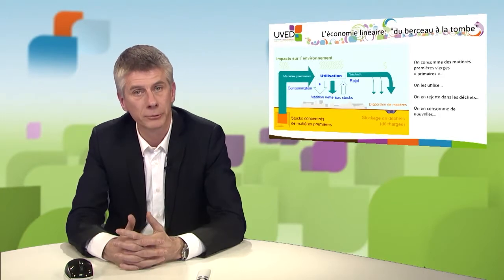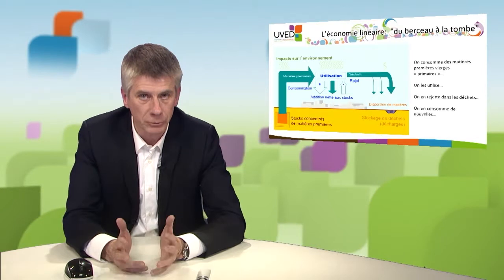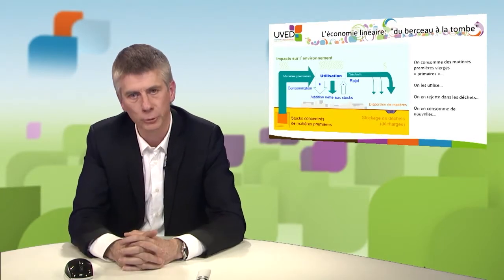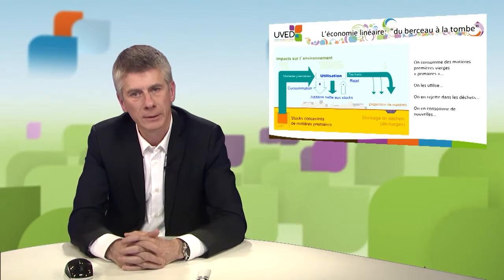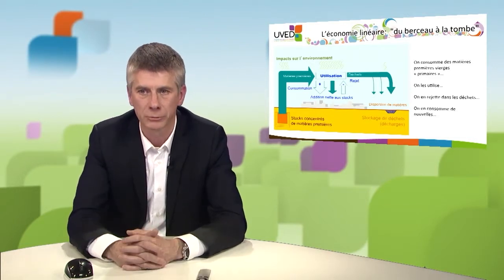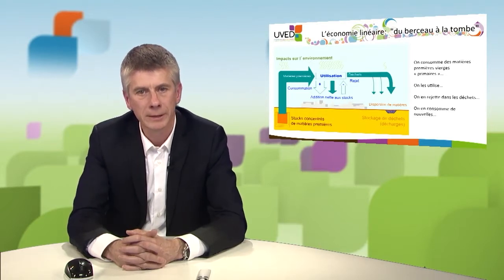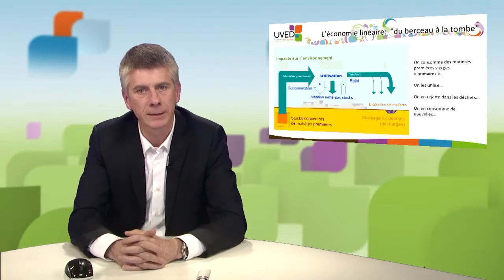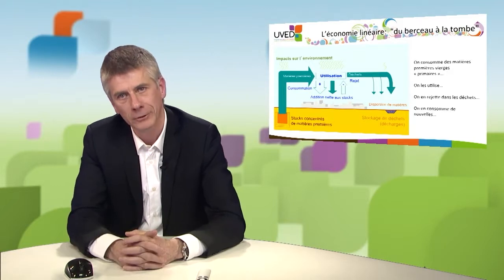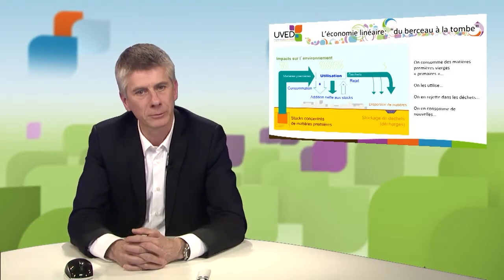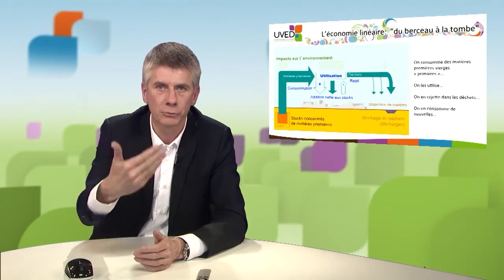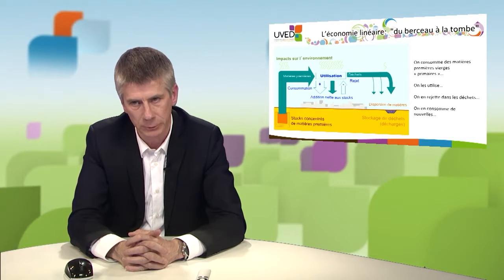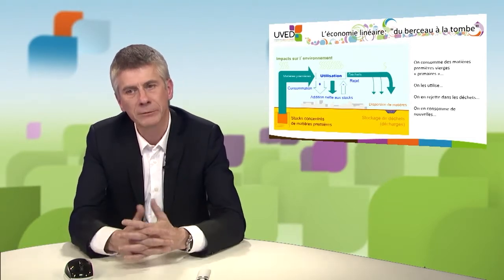This chart represents a linear economy in which everything rejected by the economy is dispensed to nature or stored in waste storage areas. This model has been stigmatized since the 1970s and is very theoretical. In practice, the economy is never totally linear, because at all times — even in the most extreme consumer societies — we've always reused and recycled part of materials such as steel, copper, aluminum, and paper.